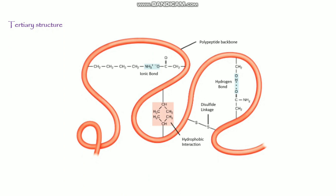Next is the tertiary structure. The overall three-dimensional structure of a polypeptide is called the tertiary structure. Tertiary structure is primarily due to the interaction between the R groups — the side chains of the amino acids that make up the protein. The tertiary structure also contains different kinds of hydrogen bonds and disulfide linkages. This disulfide bond is stronger than the hydrogen bond, and it forms between cysteine and cysteine amino acids.